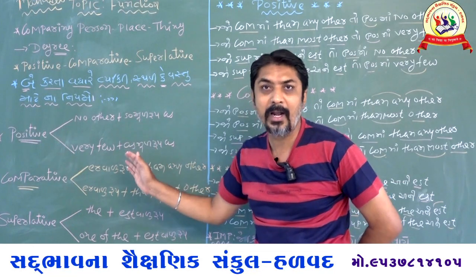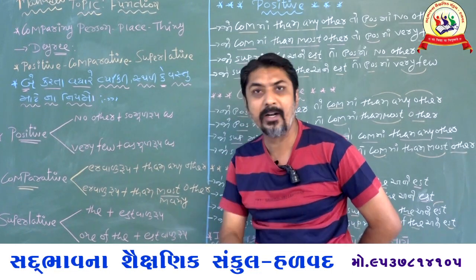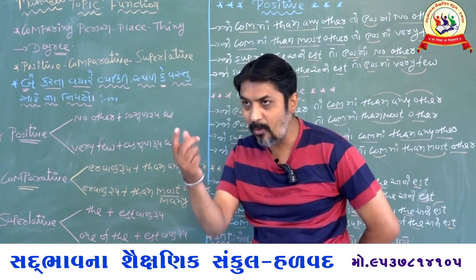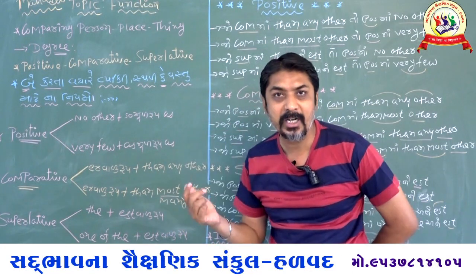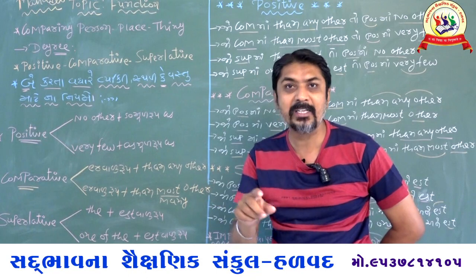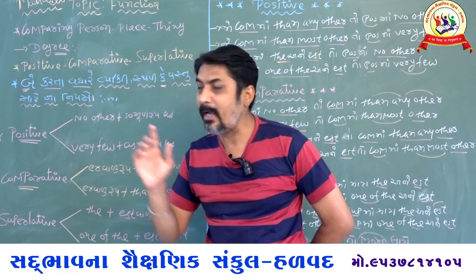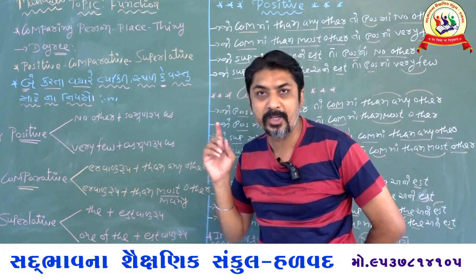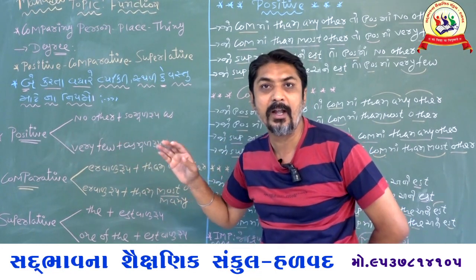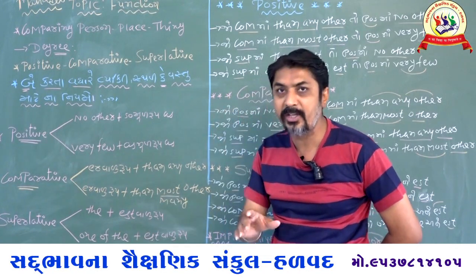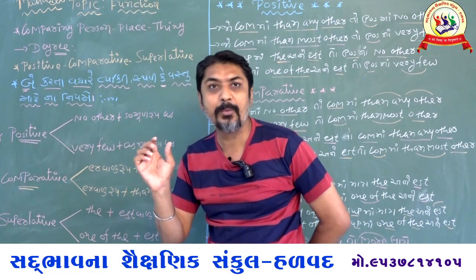Always remember: positive, comparative, superlative — for two or more persons, places or things. Positive: 'no other' + base form + 'as...as'; alternative is 'very few' + base form + 'as...as.' Comparative: 'er' form + 'than any other'; alternative 'er' form + 'than most or many other.' Superlative has two rules: 'the' + 'EST' form, and 'one of the' + 'EST' form. Remember this rhythm: 1→3→5 and 2→4→6.